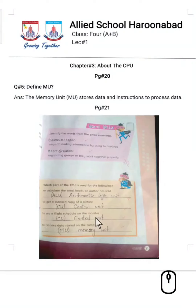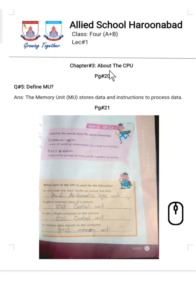Bismillahirrahmanirrahim, Assalamualaikum students. This is your computer teacher for Class 4 from Allied School Harunabad Campus. We were discussing Chapter 3 about the CPU — what is the CPU, i.e., Central Processing Unit, and what is its working. As you all know, CPU is the brain of the computer and it has three parts.